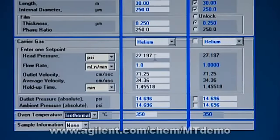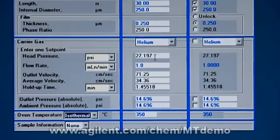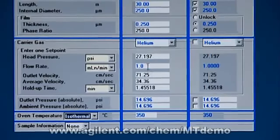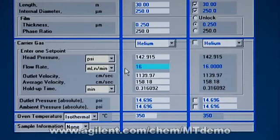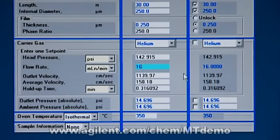Now, let's say I want to do a flow program. How high of a flow can you go to? Well, let me try 16 mils a minute under these same conditions. Now, the translator says I almost need 143 psi. And most of the standard instruments we have have 100 psi inlet.